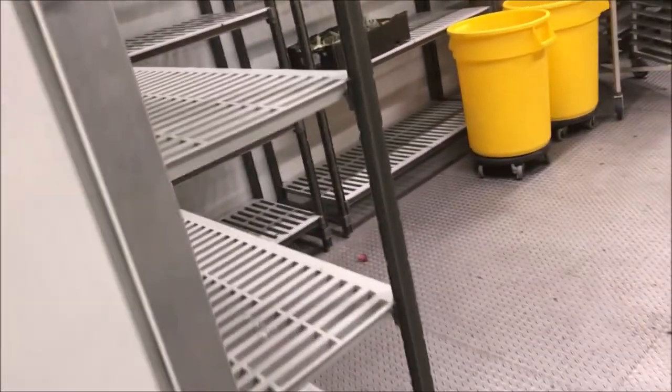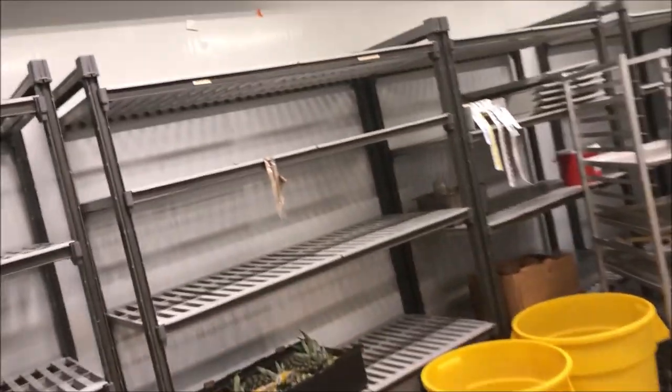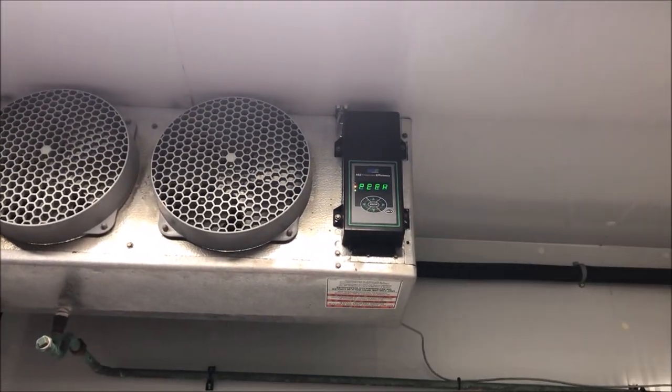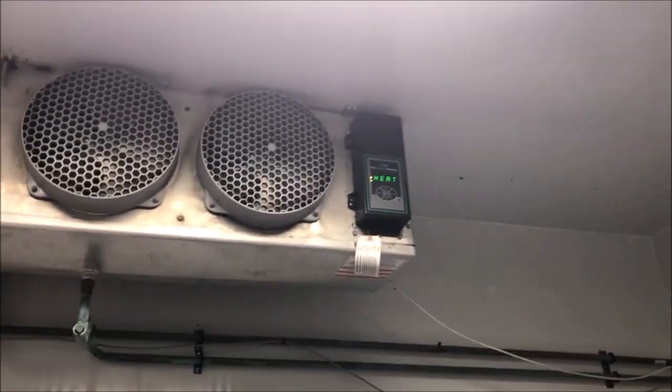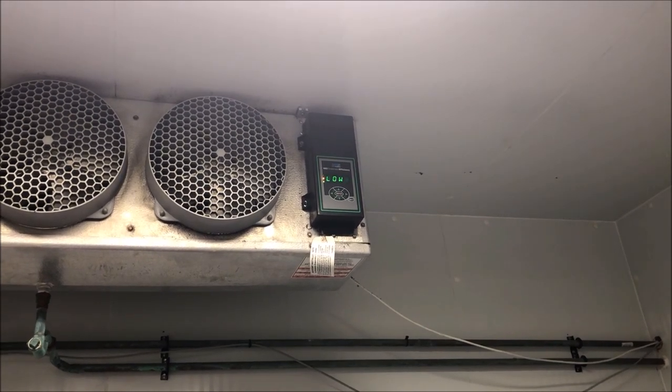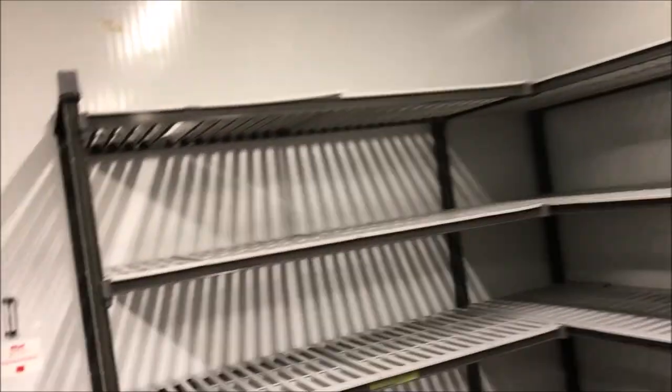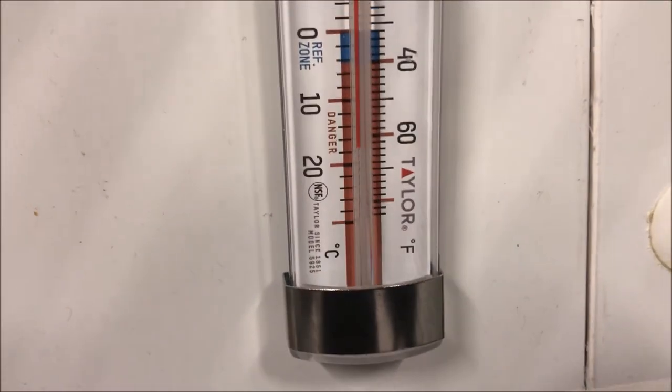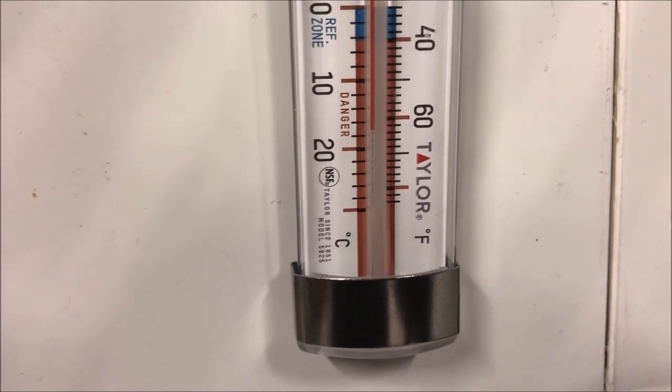Got a P1 error code there, which is our display low superheat, so we definitely got some issues there. Same thing on this coil, so both Cato-Therm controllers are flashing error codes and it's warm in the box here. Up on our gauge we are showing approximately 60 degrees.